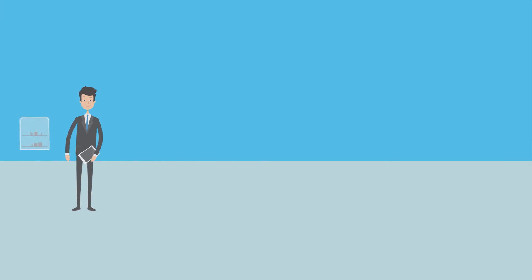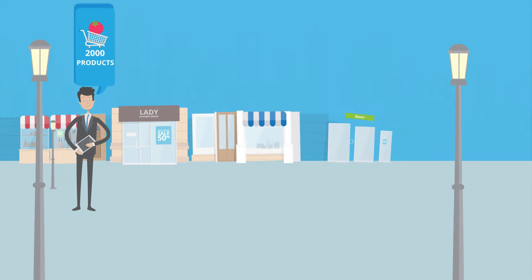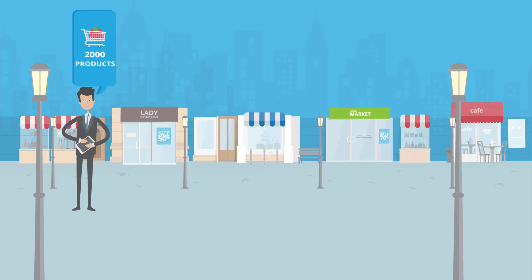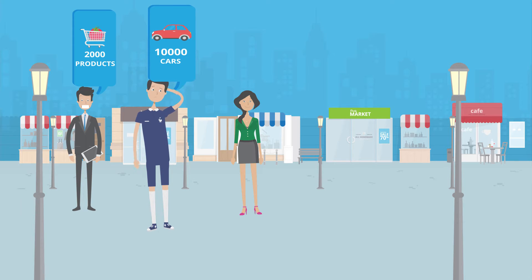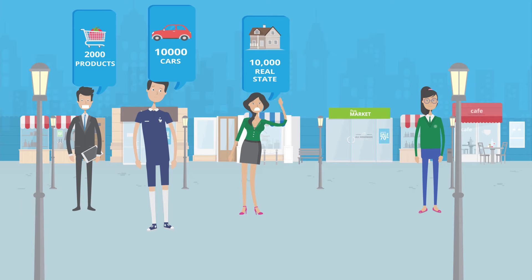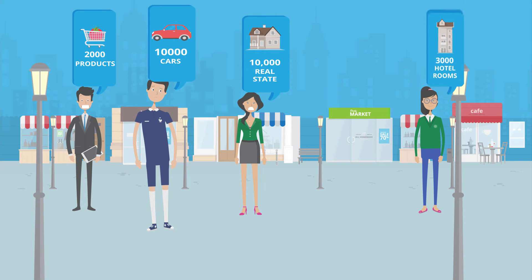Hi, this is Jim. He has a website that contains 2,000 products. Bill has 10,000 cars on his site. Meet Claire, she has thousands of real estate info. Jenny runs a hotel business having 3,000 rooms.